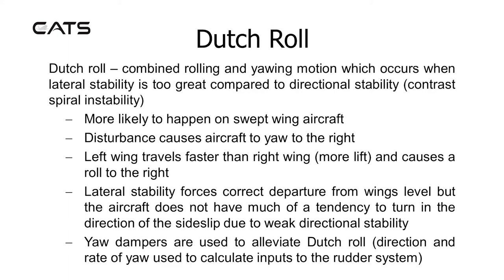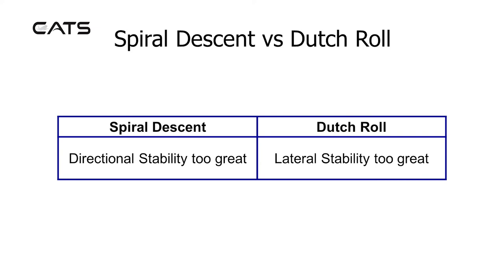Dutch roll is a combined rolling and yawing motion which occurs when lateral stability is too great compared to directional stability — contrast this with spiral instability. It is more likely to happen on swept wing aircraft. A disturbance causes the aircraft to yaw to the right; the left wing travels faster than the right wing, generates more lift, and causes a roll to the right. Lateral stability forces correct the departure from wings level, but the aircraft does not have a strong tendency to turn in the direction of the sideslip due to weak directional stability. Yaw dampers are used to alleviate Dutch roll; for example, the direction and rate of yaw is used to calculate inputs for the rudder system. In summary: in a spiral descent, directional stability is too great; in a Dutch roll, lateral stability is too great.